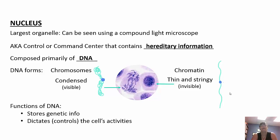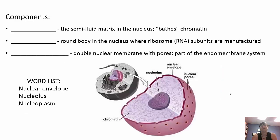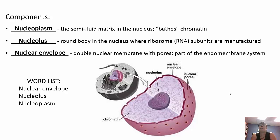The nucleus is the largest organelle, visible with a compound light microscope. It's the control center, containing hereditary information composed primarily of DNA. Chromatin is thin and stringy — almost invisible — but condenses into chromosomes when the cell is ready to divide. It's surrounded by a nuclear envelope, a double membrane with pores. Nucleoplasm is the semi-fluid matrix. The nucleolus is where ribosomal RNA is manufactured, so ribosomes are made there.